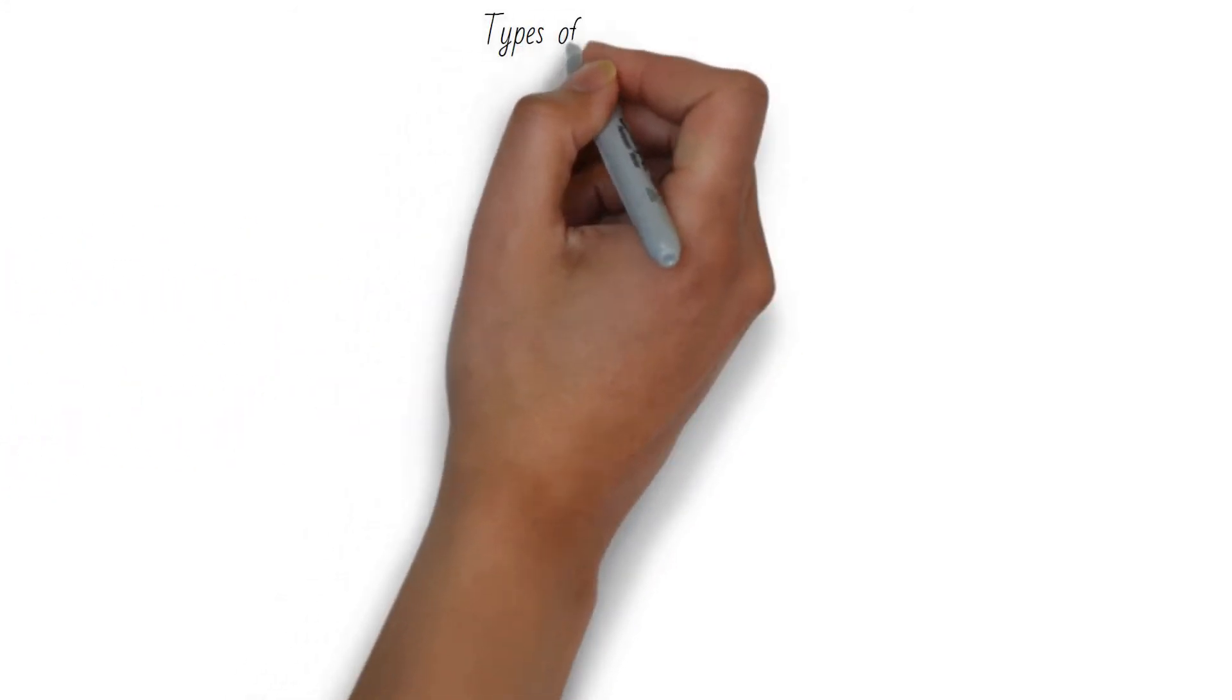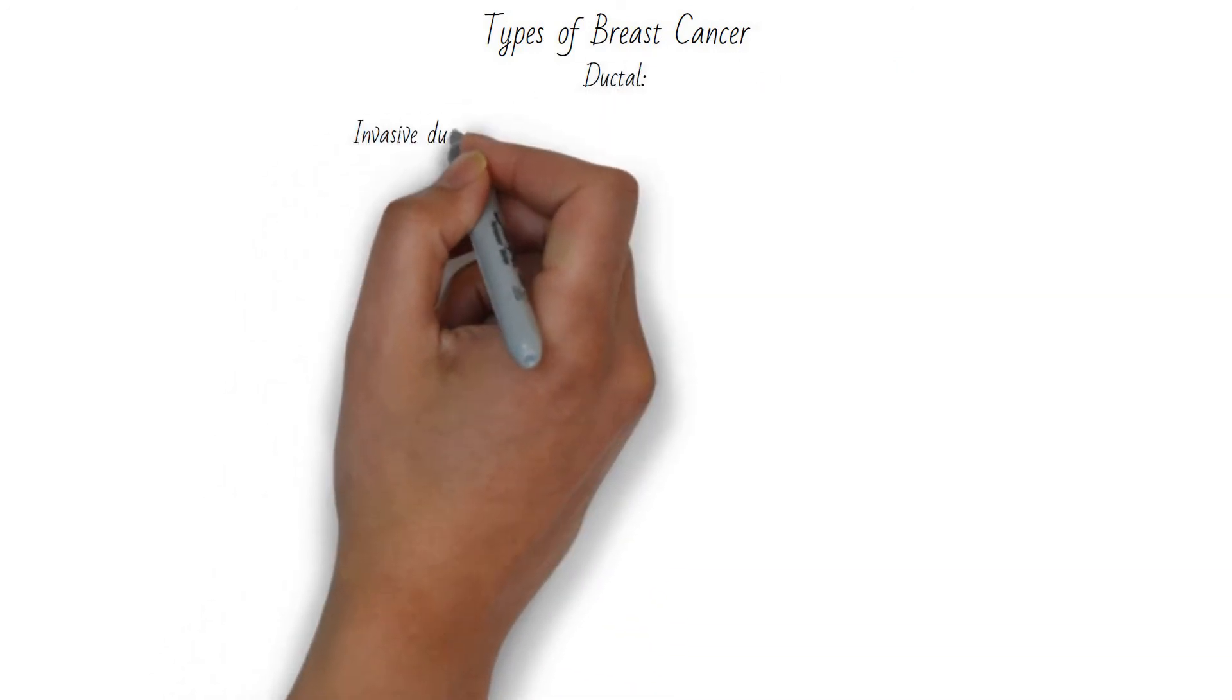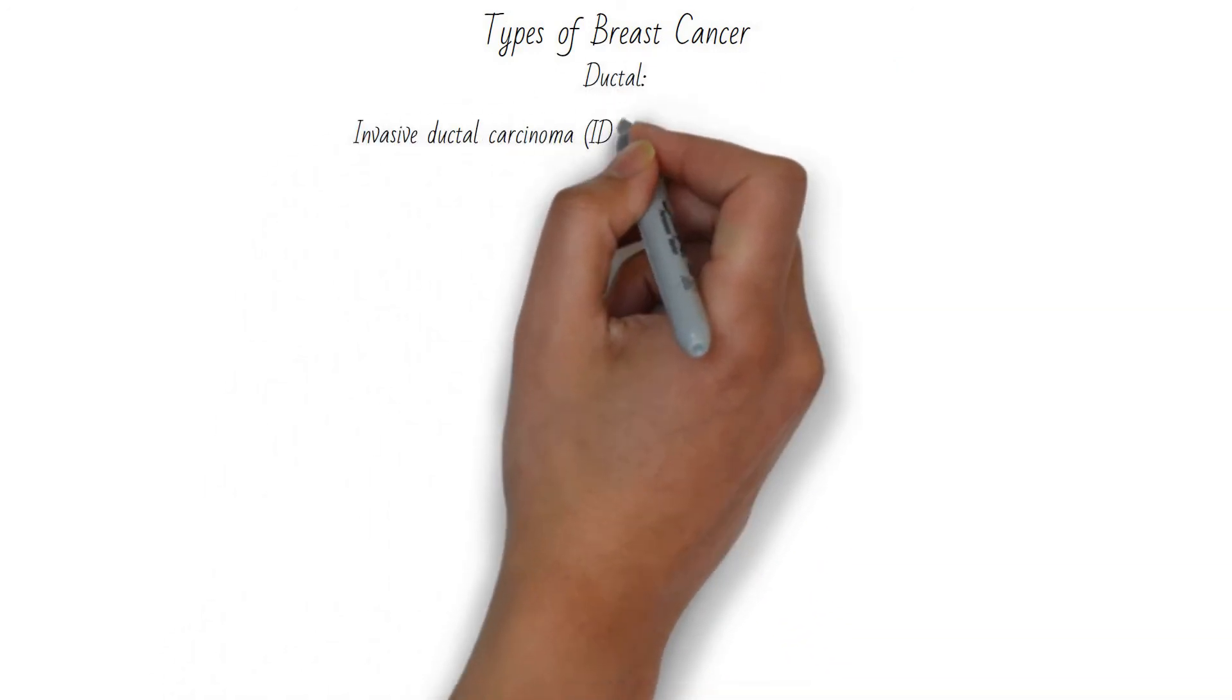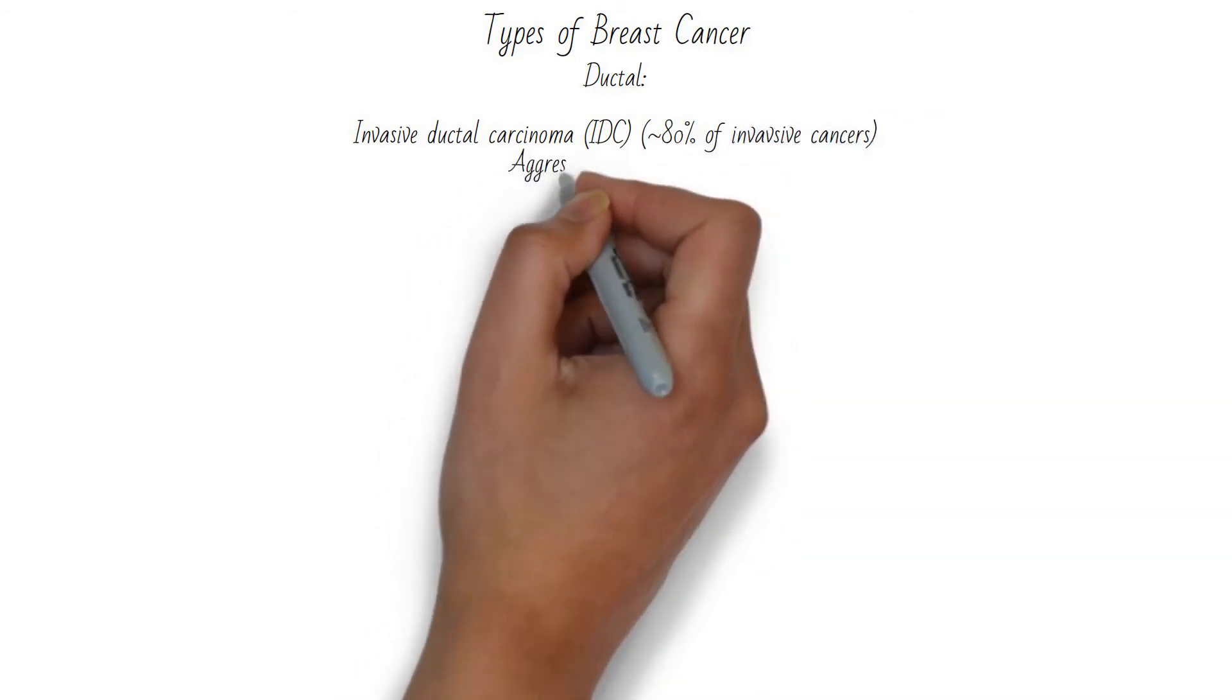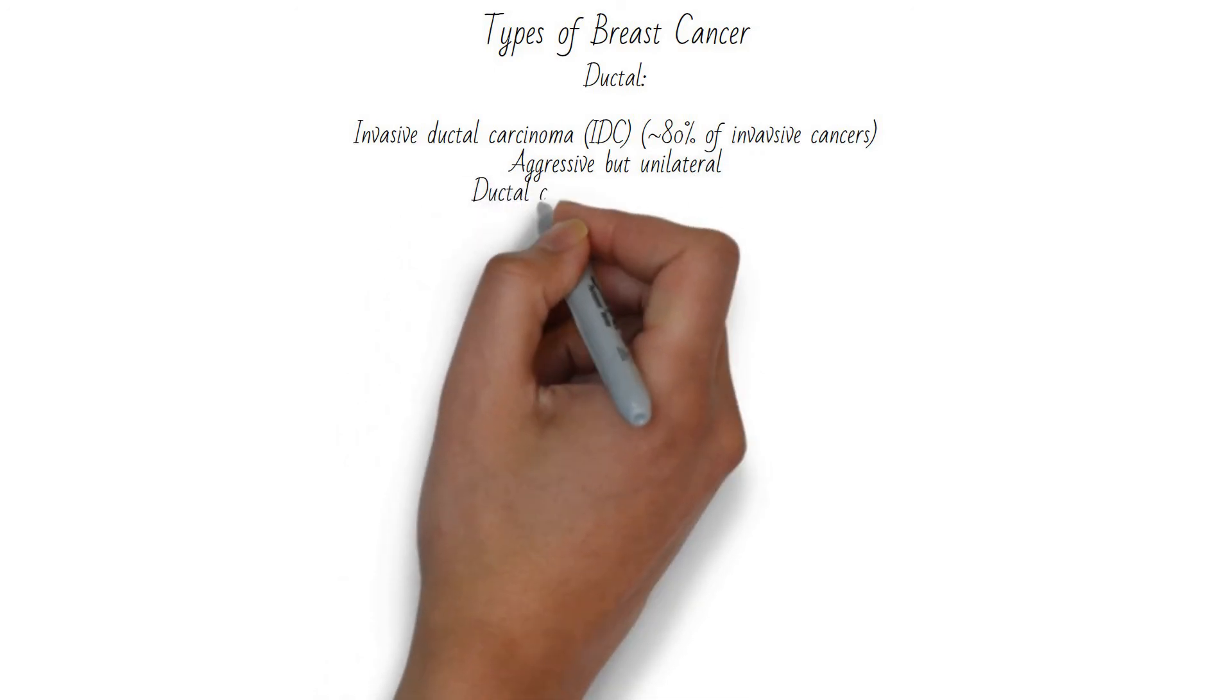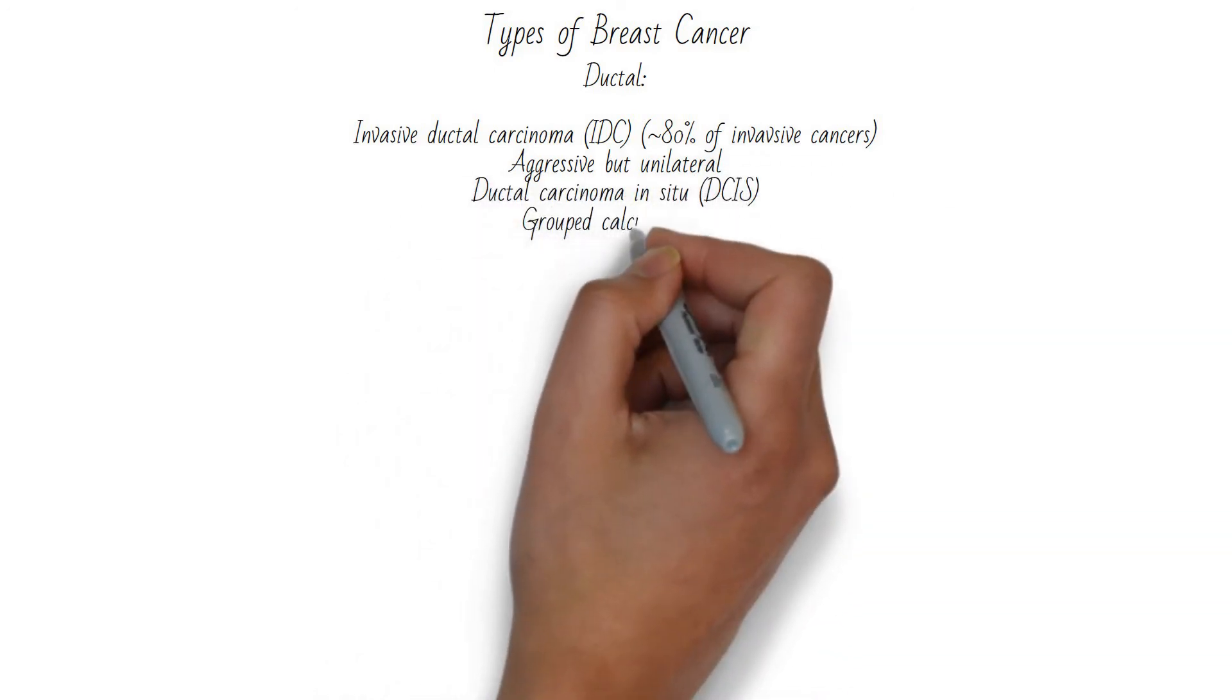The most common types of breast cancer are ductal and lobular. Ductal cancers include invasive ductal carcinoma, which makes up about 80% of invasive breast cancers. They are aggressive but usually unilateral. If caught before breaking through the basement membrane, this is called ductal carcinoma in situ.